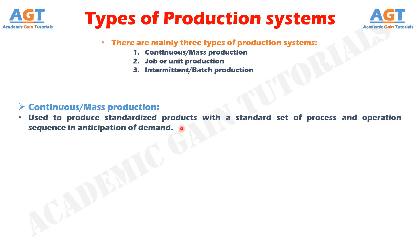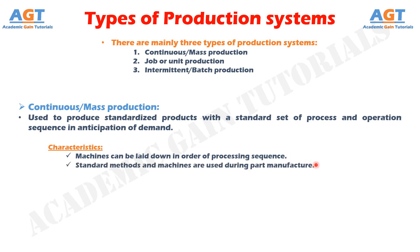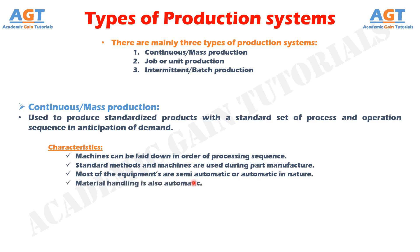What are the characteristics of continuous or mass production? As the same product is manufactured for a sufficiently long time, machines can be laid down in order of processing sequence. Standard methods and machines are used during part manufacture. Most of the equipment is semi-automatic or automatic in nature, and material handling is also automatic, such as conveyors.